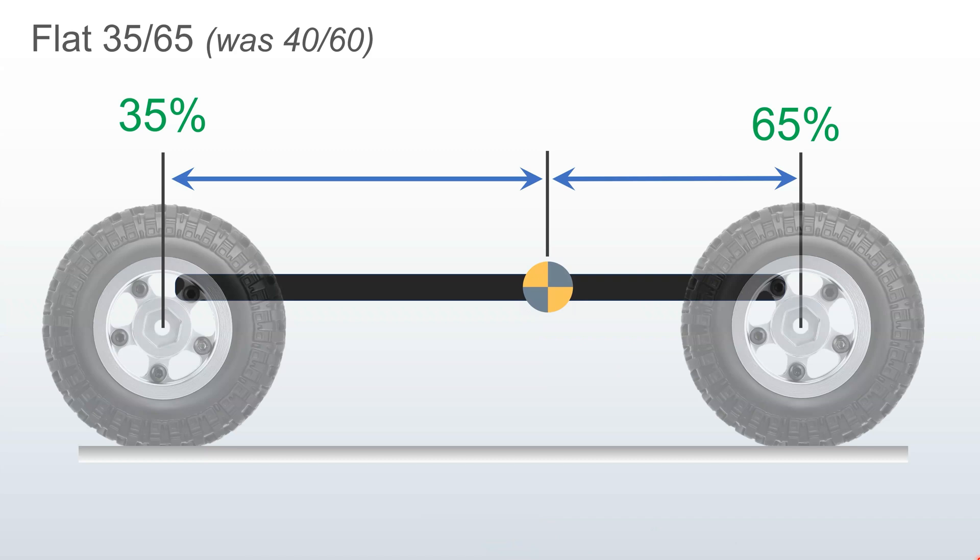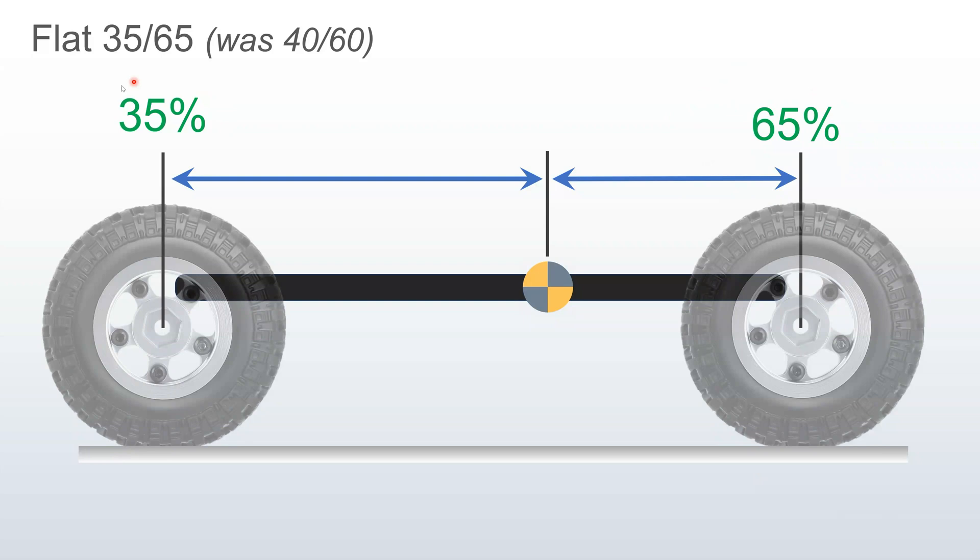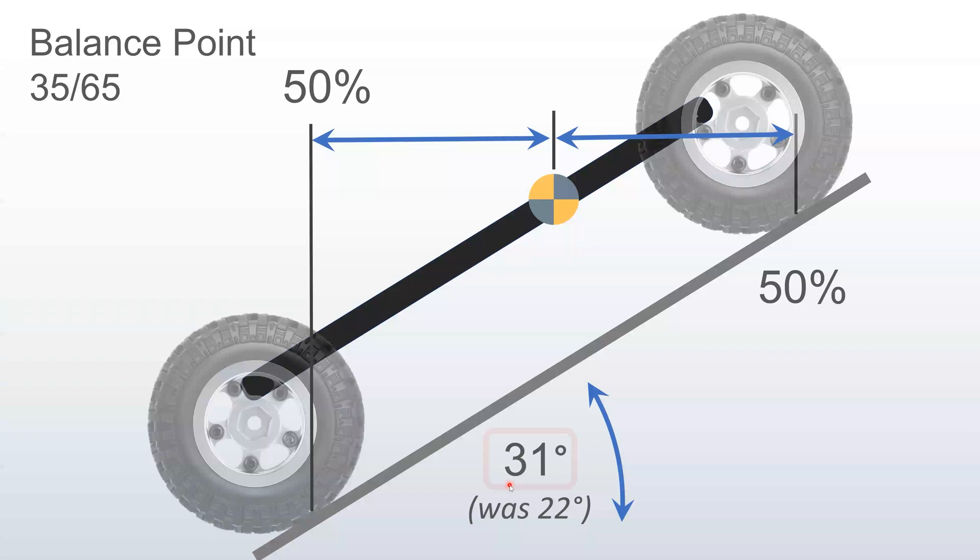Let's take a look at a couple variations. Lower center of gravity and forward weight bias. Imagine we change our weight bias. It was 40-60. Let's put more weight in the front. We move some components forward. We add some brass. You've now got 65% in the front and 35% in the rear. What effect does that have? Well, you've now got 1,625 grams on the front, whereas before you had 1,500. So it changes your weight bias. If you look at it on a slope, your 50-50 balance point is now 31 degrees, whereas before it was 22 degrees. So adding more weight forward makes a pretty significant difference in the angle of your weight bias.